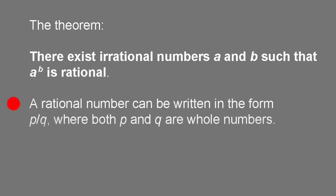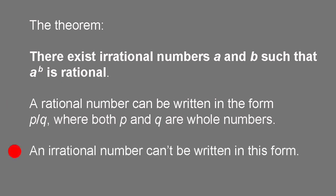A rational number, remember, is one that can be written in the form of one whole number over another, whereas an irrational number can't be written in this way.